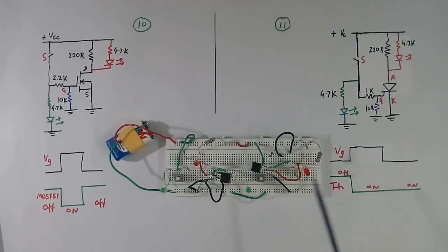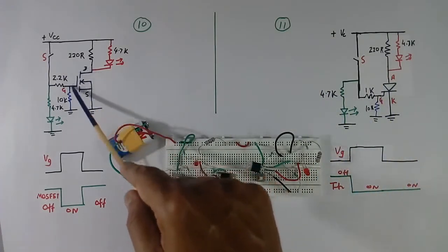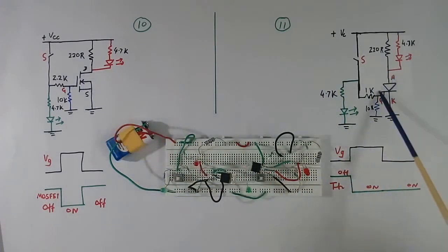Here I have assembled 2 circuits. This one is this, this one is this. They are similar. Only difference is here I have used MOSFET, here I have used Thyristor.